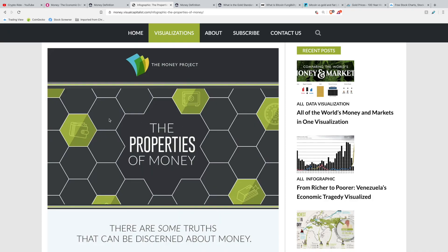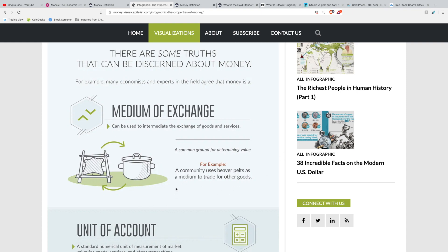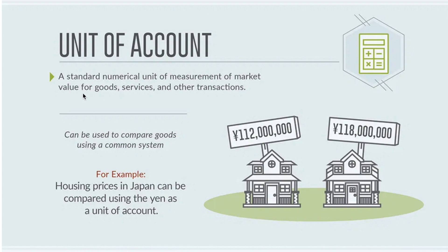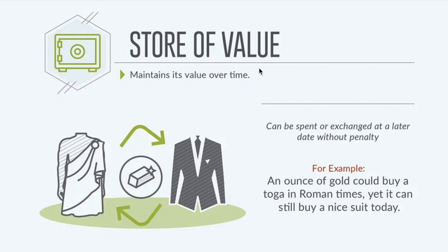Let's get into some of these truths about what money is a little bit deeper. A medium of exchange means you need to be able to use it and buy things with it, whether that be a good like a product or a service like a massage. A unit of account is a standard numerical unit of measurement of market value for goods, services, and other transactions — it helps you compare goods using a common system, like comparing houses in Japan using the yen. A store of value is something that should have value and maintain that value over time. For example, an ounce of gold could buy you a toga in Roman times, yet it could buy you a nice suit today.